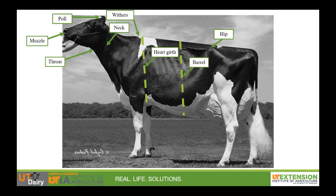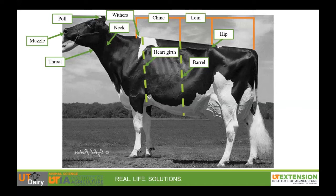Next we'll talk about the top line of the cow and the different sections we break it into. First is the chine. The chine is part of the back and extends from the withers to the barrel. Behind the chine we have the loin. The loin extends from the barrel to the hips. The last part is the rump, which extends from the hips to the end of the cow.